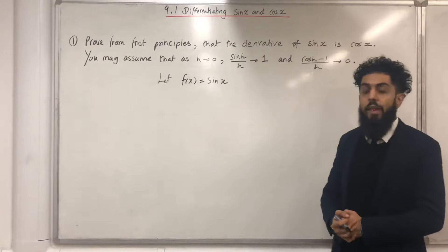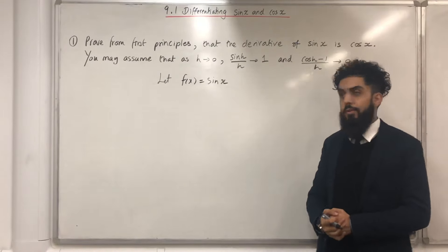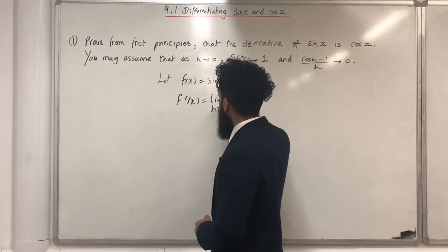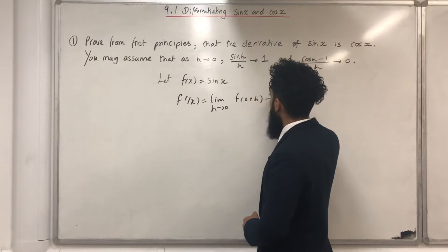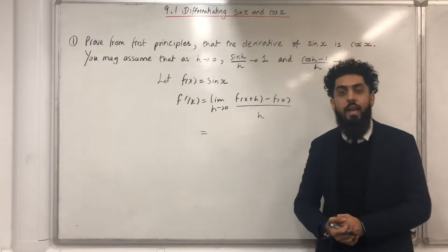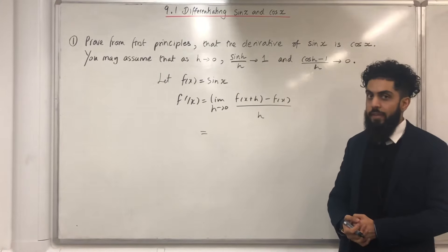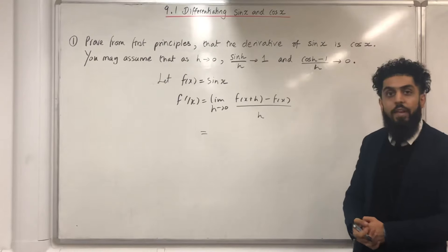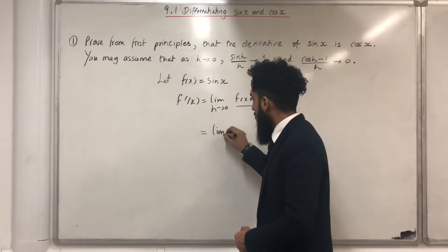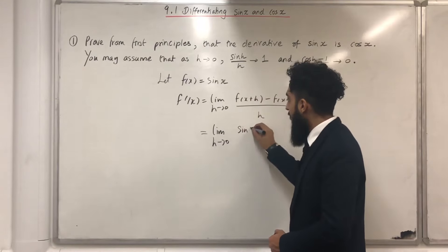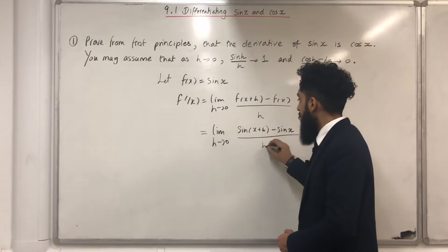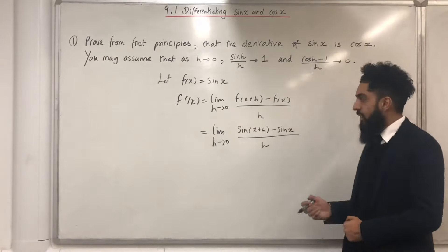The next step is to write down what f dash of x is from first principles. f dash of x is equal to limit, as h tends to 0, of f of x plus h minus f of x all over h. I can replace f of x plus h with Sine of x plus h and f of x with Sine X, obtaining: limit, as h tends to 0, of Sine of x plus h minus Sine of x, all over h.